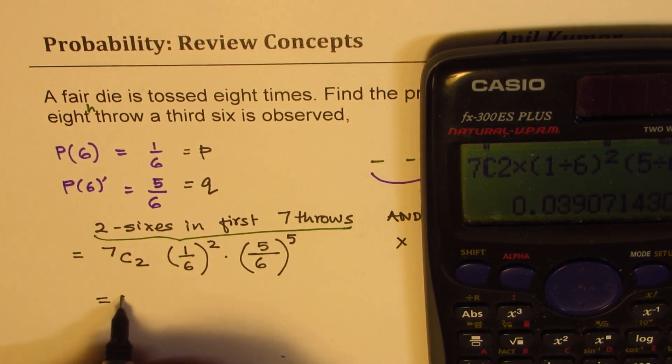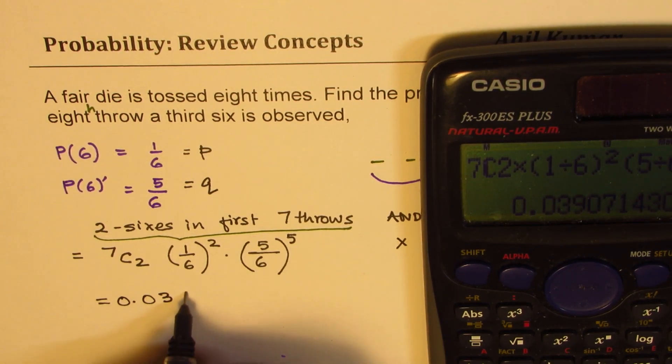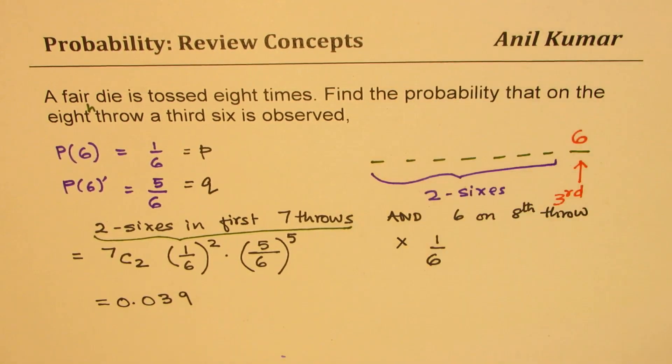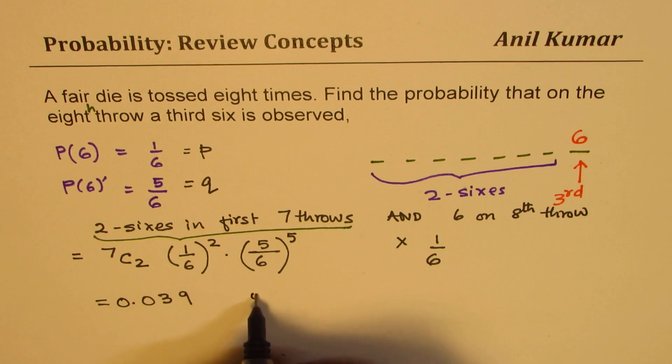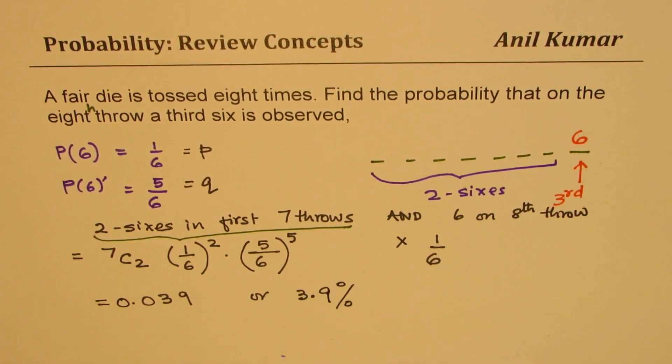What we get here is 0.039, correct? Or we can write this as 3.9%. So that becomes the solution for this question.